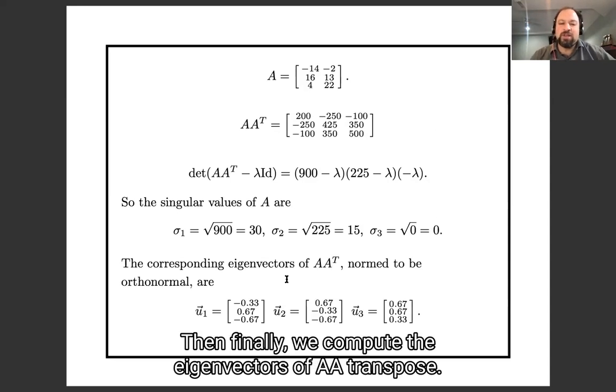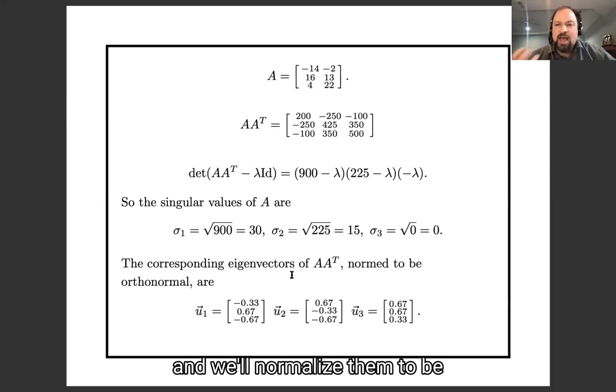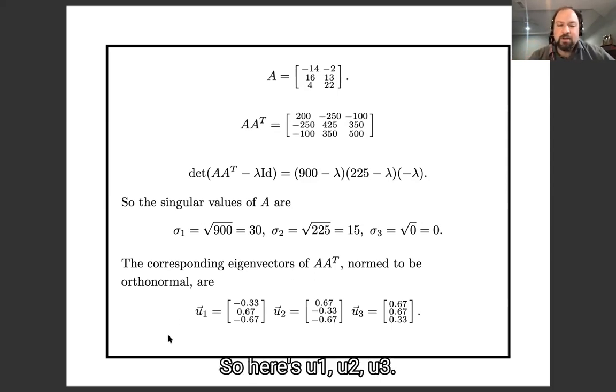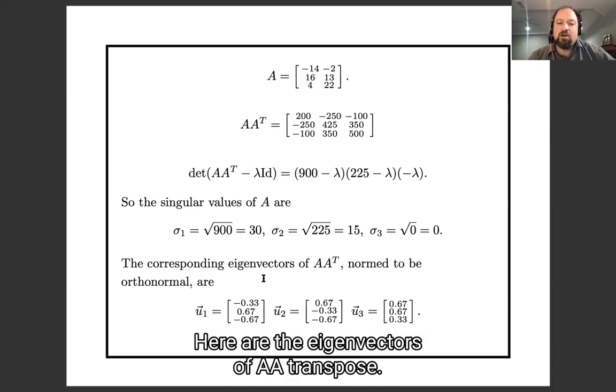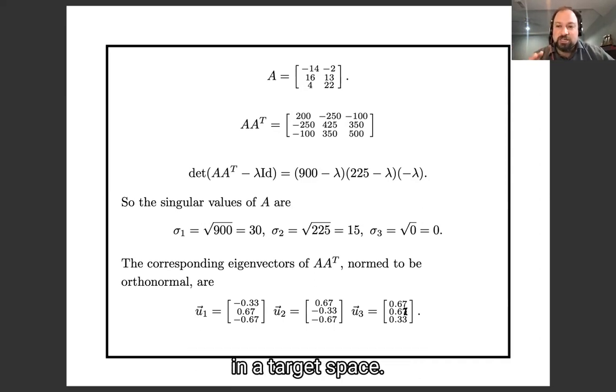Then finally, we compute the eigenvectors of A, A transpose. They're going to be orthogonal because they're eigenvectors of a symmetric matrix. And we'll normalize them to be length 1, so it'll also be ortho-normal. So here's U1, U2, U3. Here are the eigenvectors of A, A transpose. And those are going to be the singular vectors of A in the target space.